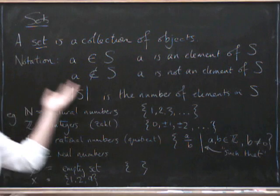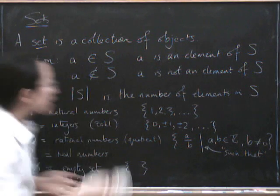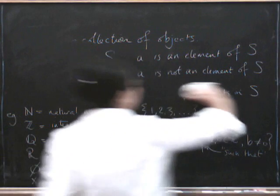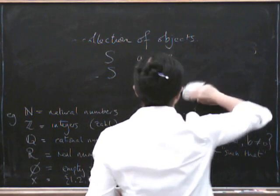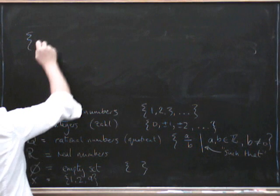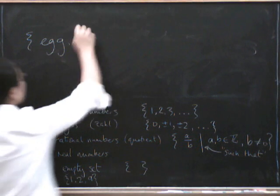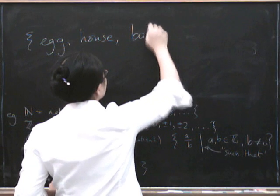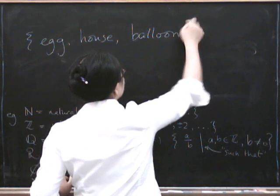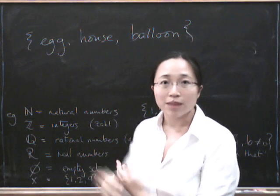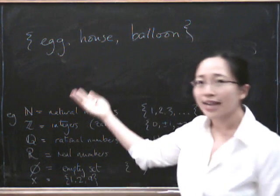So a set is a collection of objects. It doesn't have to be a sensible collection of objects. It can be a completely random collection of objects. It could be, for example, the collection of egg, house, balloon. That's a set. It's not a very useful set, not for us anyway. It's not a very mathematically stated set. But it's still a set.